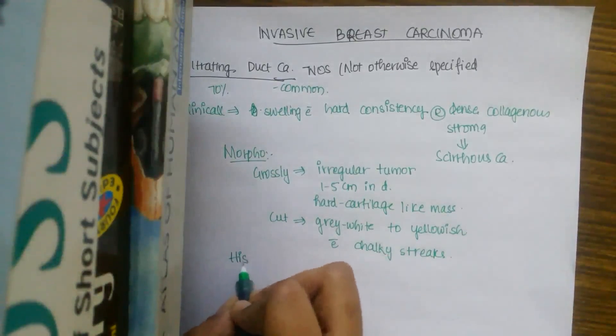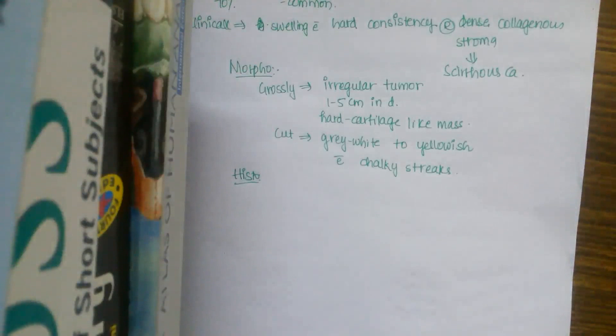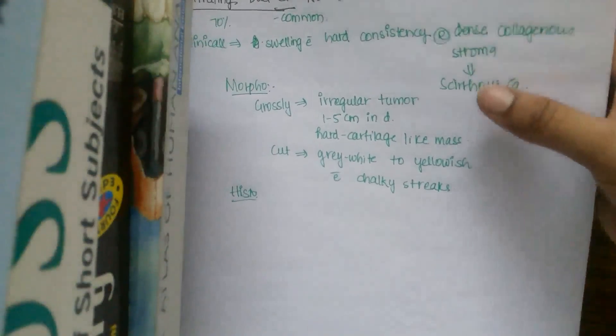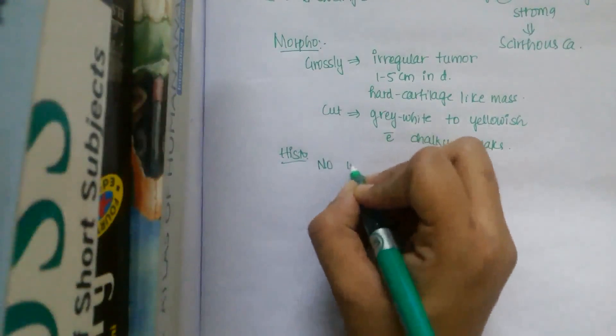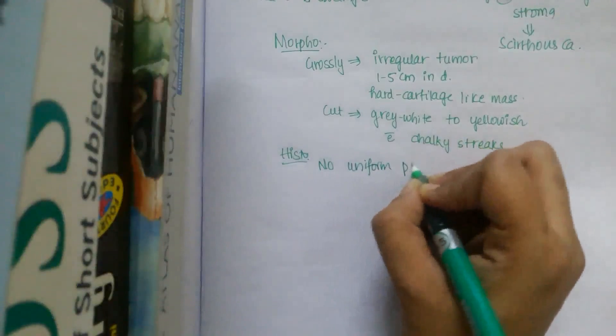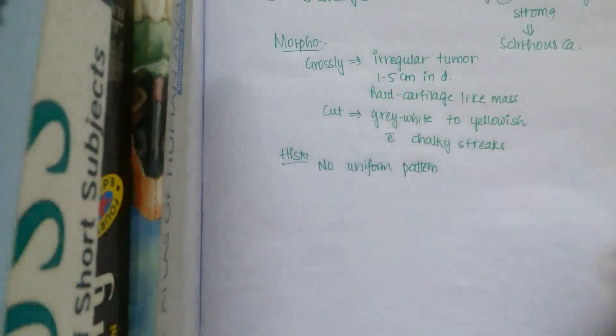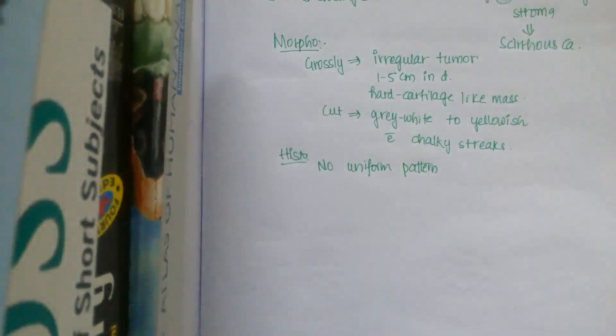So histologically speaking, as the name suggests, this tumor is different from other special types of tumor as it has no regular uniform pattern throughout the lesion. No uniform pattern is seen. So first let us draw the histological picture as we always do for any type of carcinoma. So basically the histological picture has mainly three different features.